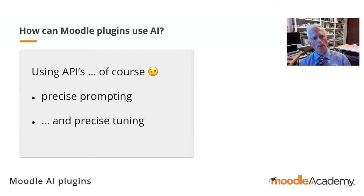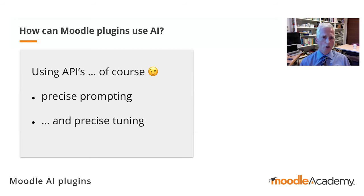So how can Moodle plugins use AI? We can use the APIs, we can use precise prompting, and we can use precise tuning — meaning training the AI with examples. By giving examples and precise prompts, we have a much better chance of getting the output that we want.